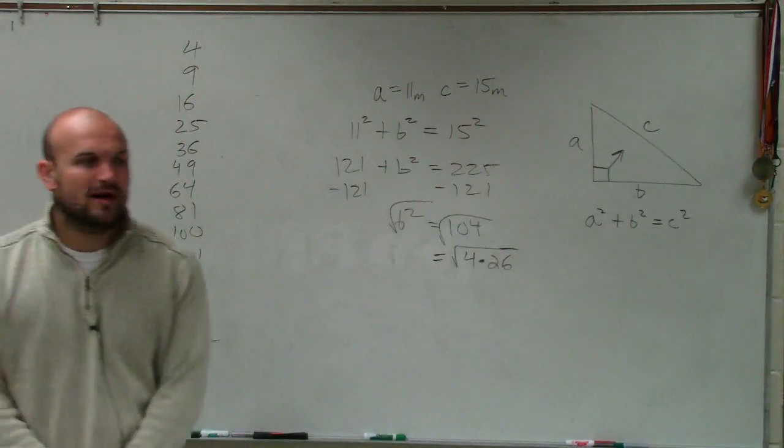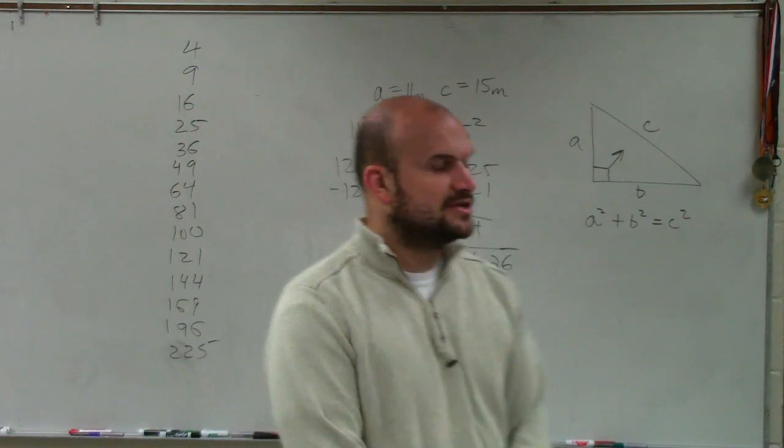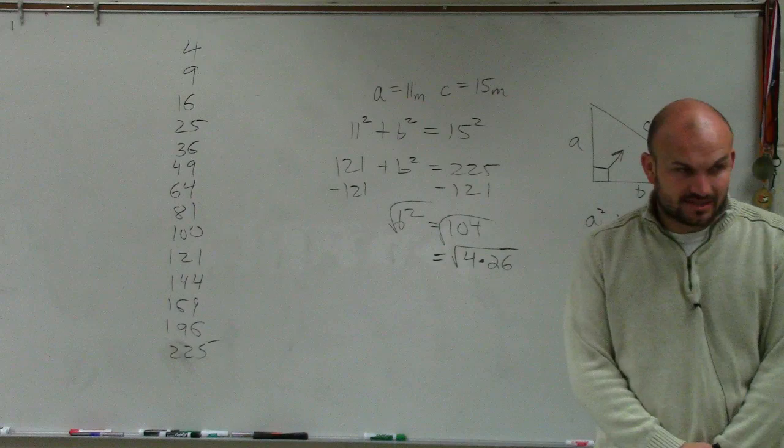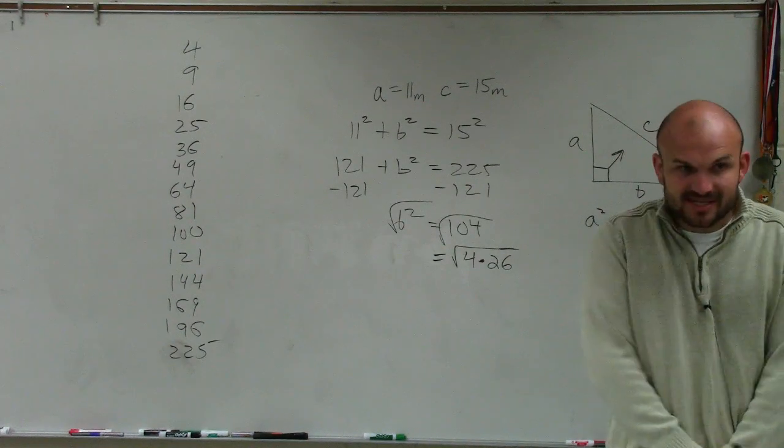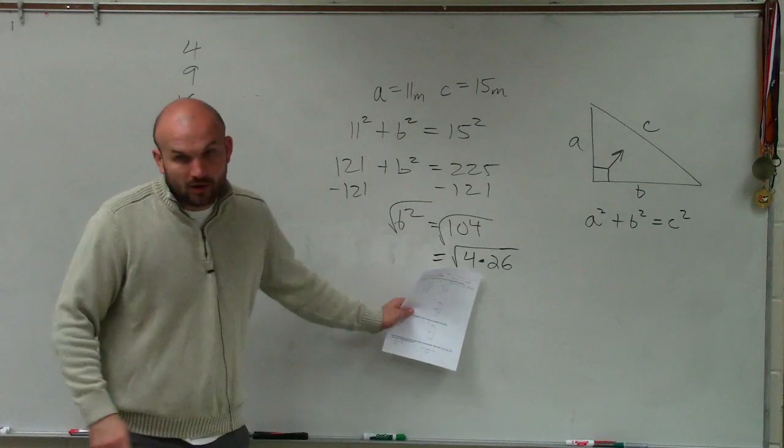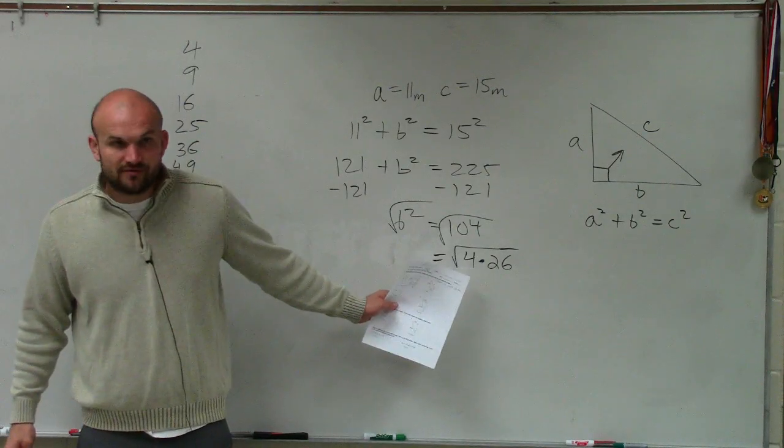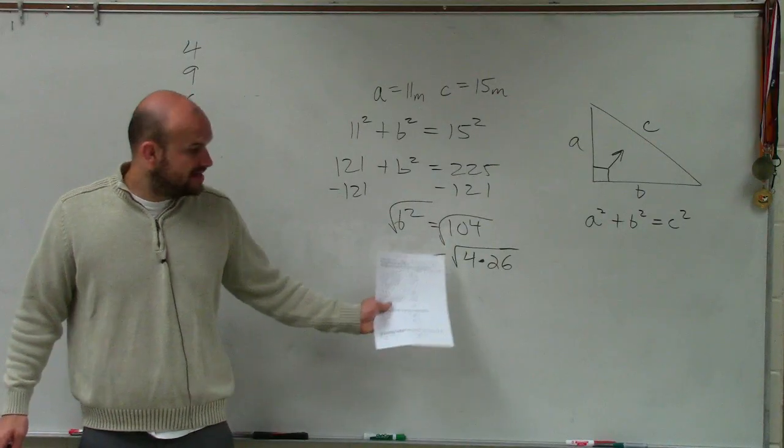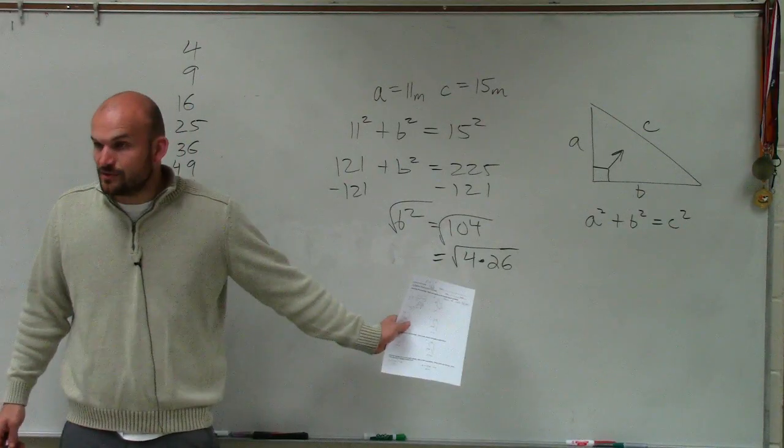So what I do is I write it as a product. And what I want you guys to understand is 104, the same thing as 4 times 26? Is it the same thing? Yes. It means the exact same thing. But now, can I take the square root of 4? Can I take the square root of 4? Can I find a number that multiplied by itself gives us 4? Yes. Is there a number multiplied by itself that gives us 26? No.